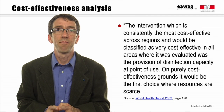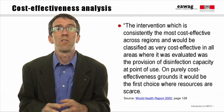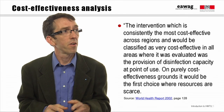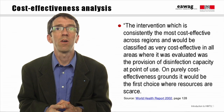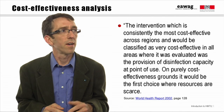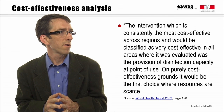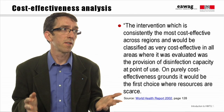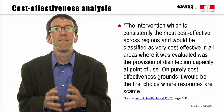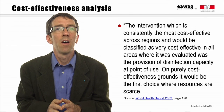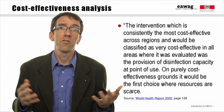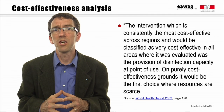Cost-effectiveness analysis is somewhat easier and lends itself more to disaggregated analysis, like comparing one HWTS option against another. The WHO's 2002 World Health Report included a similar analysis to the Hutton cost-benefit analysis and concluded that the intervention consistently the most cost-effective across regions — classified as very cost-effective in all areas evaluated — was the provision of disinfection capacity at point of use. On purely cost-effectiveness grounds, it would be the first choice where resources are scarce. This report gave a major boost to HWTS efforts.